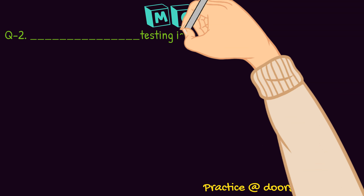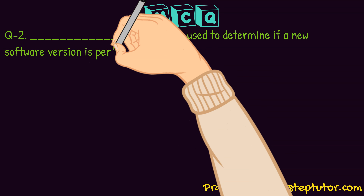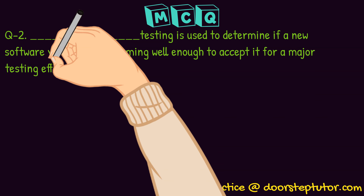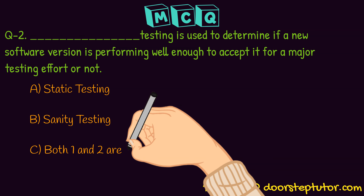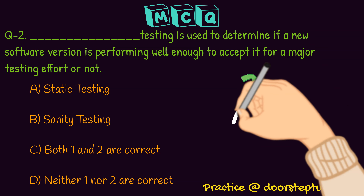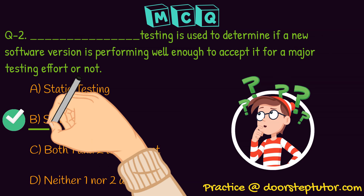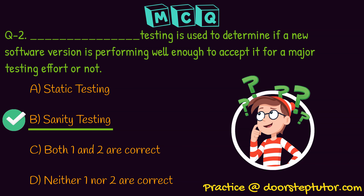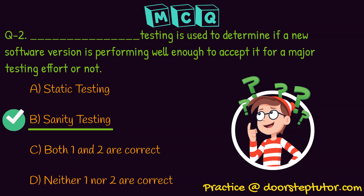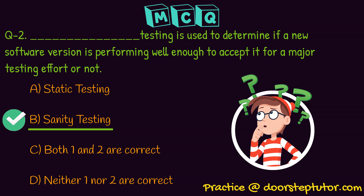Next question: which testing is used to determine if a new software version is performing well enough to be accepted for a major testing effort? The correct answer is option two: sanity testing. Sanity testing checks whether the newly developed version performs according to customer needs so that it can proceed to testing in a real-world environment. That covers all the different types of testing under functional testing. Thank you.